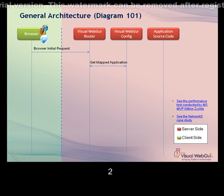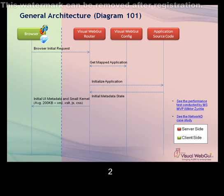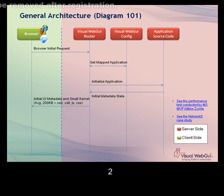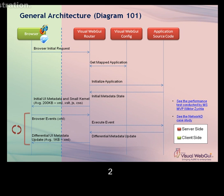When we hit a Visual Web GUI URL, the request hits the Visual Web GUI router and is mapped to an application. The application is initialized with relevant configuration properties, and its initial state is sent back to the browser along with the Visual Web GUI kernel. From there on, every time the user does something, an event is fired to the backend, and the event is processed by the application generating differential metadata state changes.